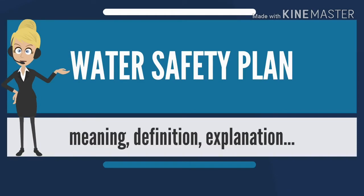A water safety plan is a plan to ensure the safety of drinking water through the use of a comprehensive risk assessment and risk management approach that encompasses all steps in water supply from catchment to consumer.